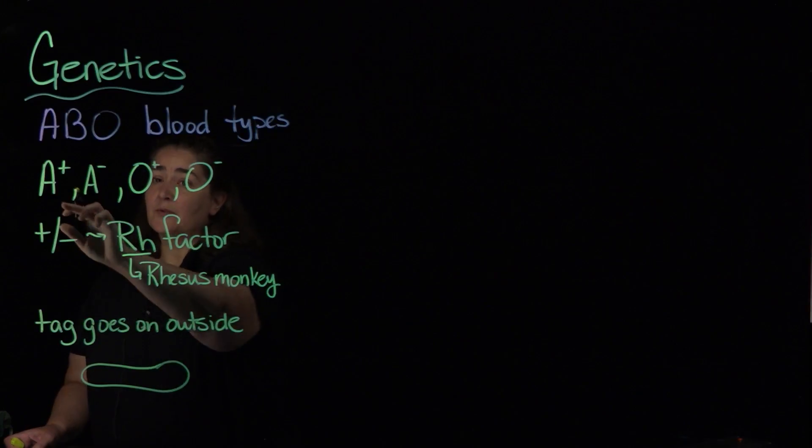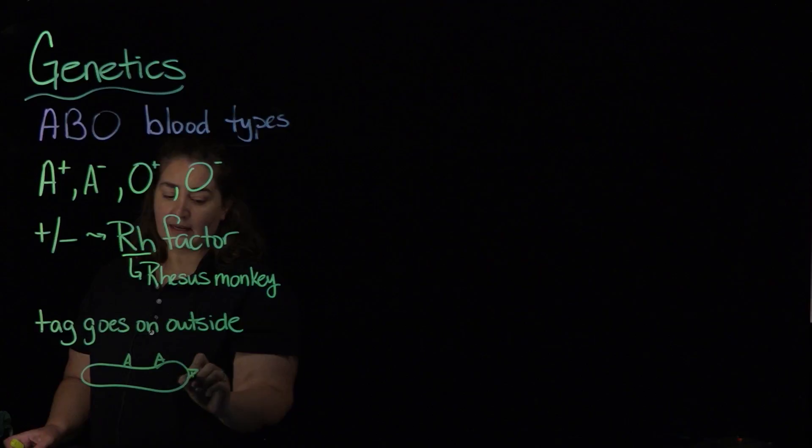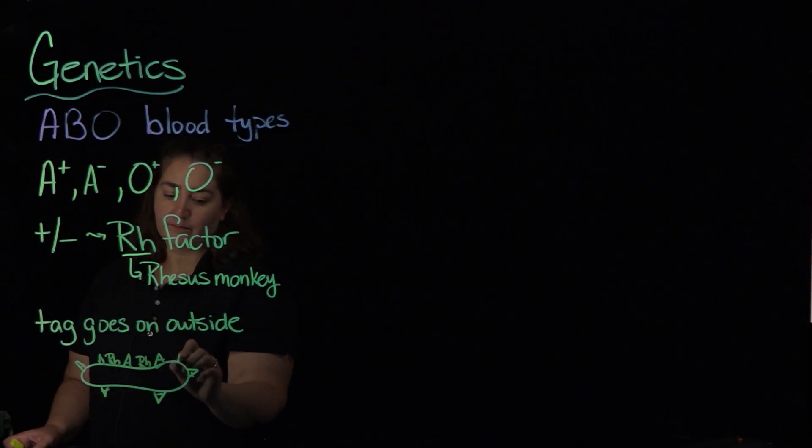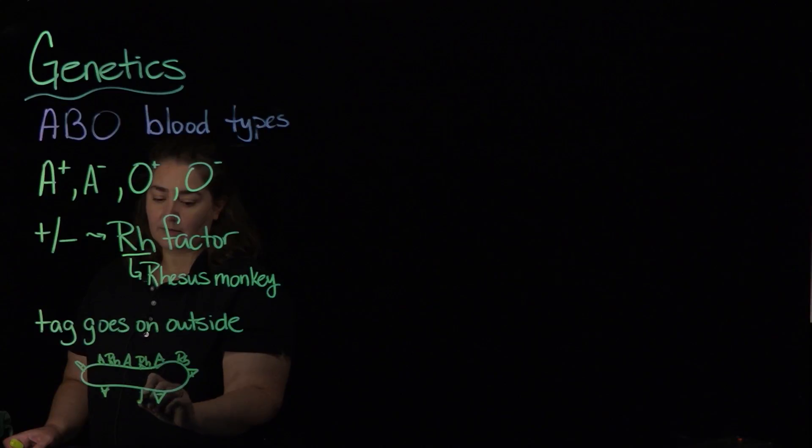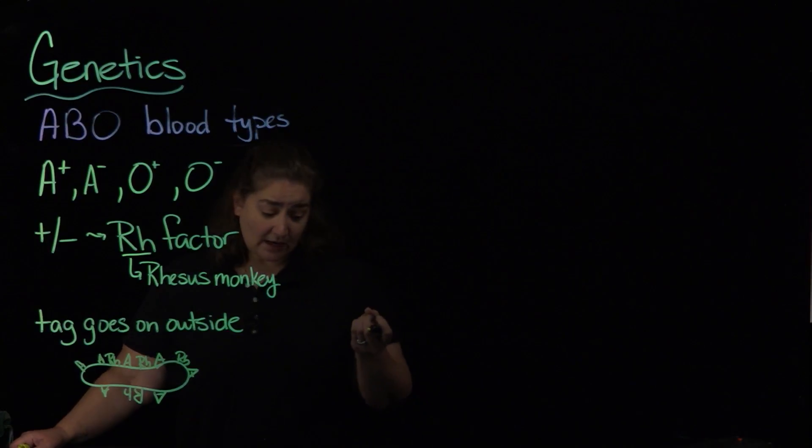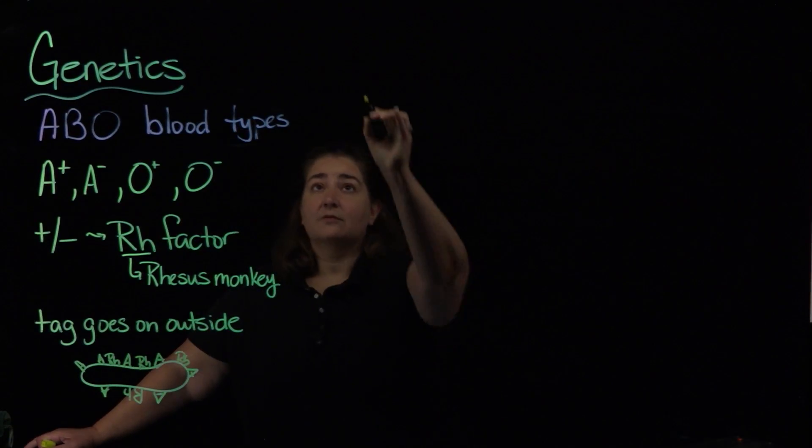So for example, if somebody is A positive, they would have that A on the outside of their red blood cell, but they would also have the Rh factor. So it's another tag that goes on the outside of the red blood cells.